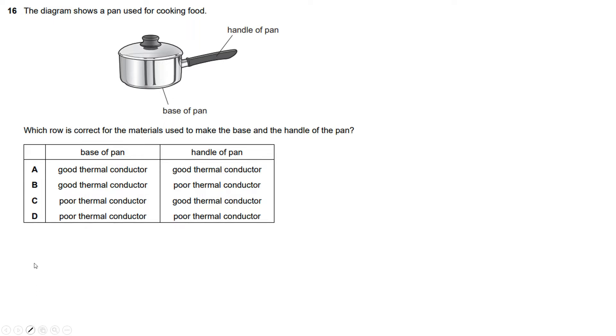The diagram shows a pan used for cooking food. Which row is correct for the materials used to make the base and the handle of the pan? This is the handle and this is the metal base. The base of the pan must be a good thermal conductor or a poor thermal conductor—those are the choices we have.